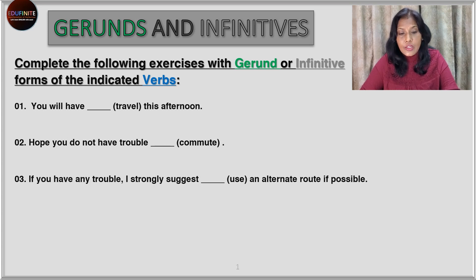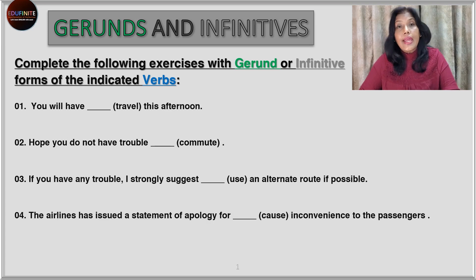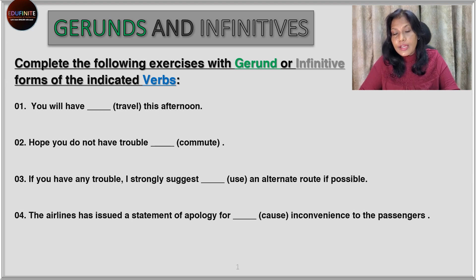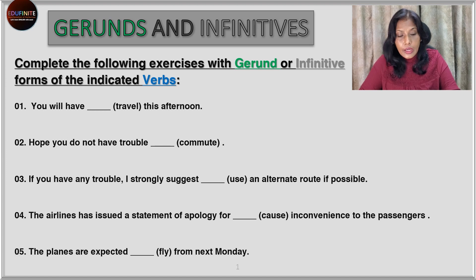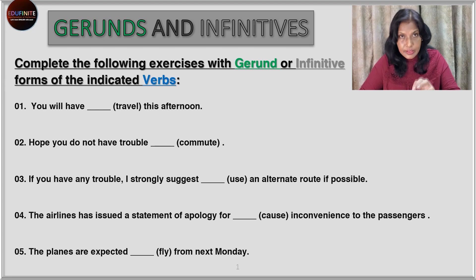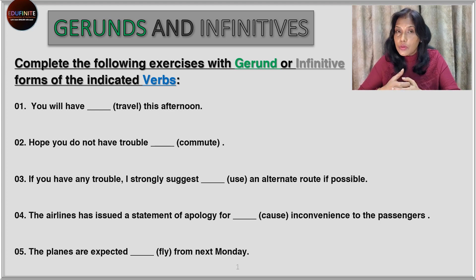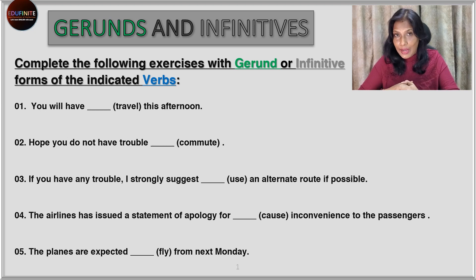If you have any trouble, I strongly suggest, blank — the verb is 'use' — an alternate route if possible. The airline has issued a statement of apology for, blank — the verb is 'cause' — inconvenience to the passengers. The planes are expected, blank — the verb is 'fly' — from next Monday. You can pause the video, write down your answers deciding on gerund or infinitive form, and then come back and check the answers with mine.